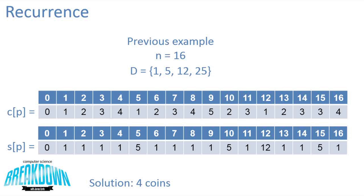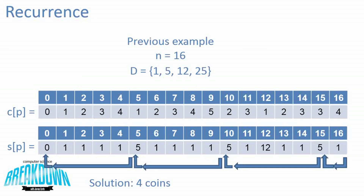We've found it only takes 4 coins. To find which 4 coins, we look at the S array. Starting at S(16) = 1, we subtract 1 to go to index 15, where S(15) = 5, subtract 5 to go to index 10, where S(10) = 5, subtract 5 to go to index 5, where S(5) = 5, subtract 5 to reach index 0. Following these arrows, we've used 3 nickels and 1 penny — the optimal solution for 16 cents with this denomination.